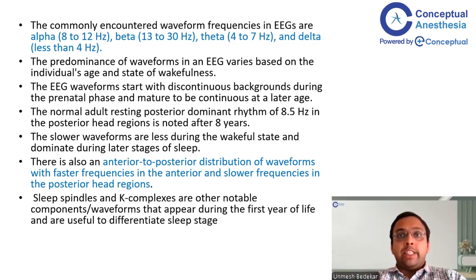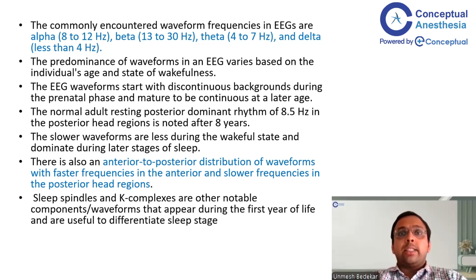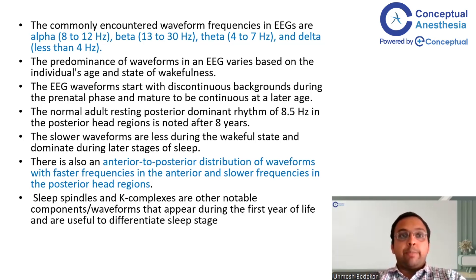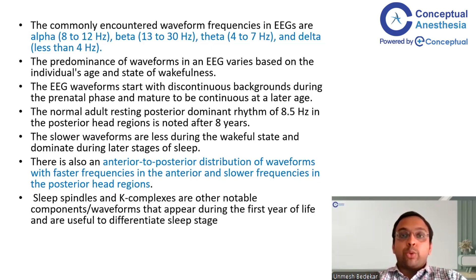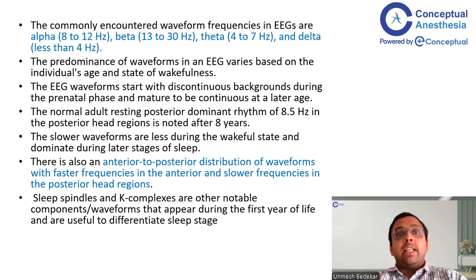The predominance of waveforms in an EEG varies based on the individual's age and state of wakefulness. EEG waveforms start with discontinuous backgrounds during the prenatal phase and mature to be continuous. In the normal adult, the resting posterior dominant rhythm of 8.5 Hz in the posterior head regions is noted at around 8 years. Slower waveforms — theta and delta — dominate during drowsy states and later stages of sleep. There is also an anterior-to-posterior distribution, with faster frequencies anteriorly and slower frequencies in the posterior head regions.